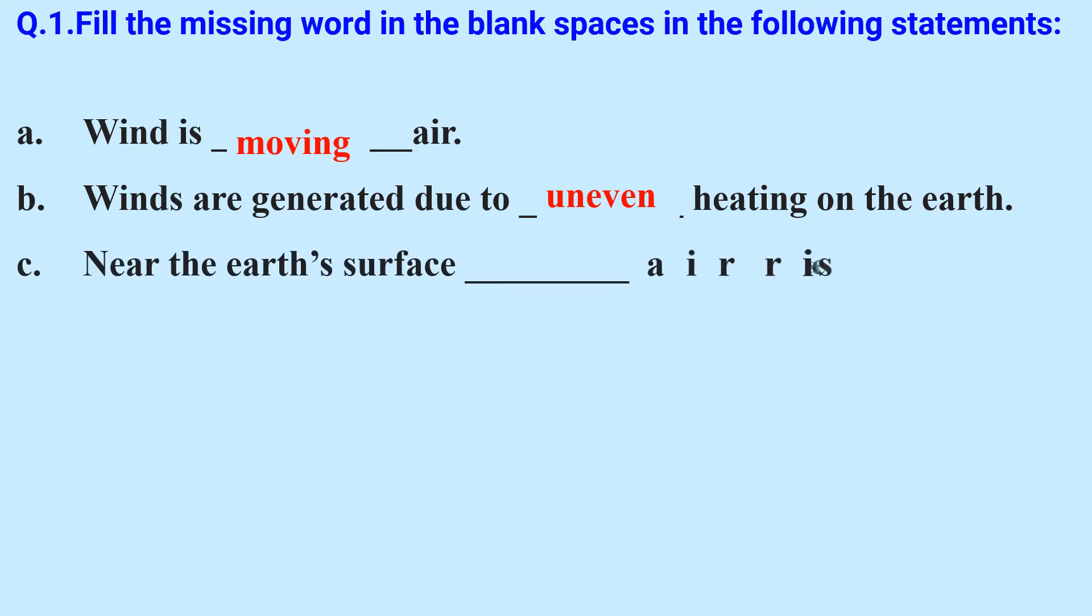Near the earth's surface ___ air rises up whereas ___ air comes down. Answer: warm and cooler.